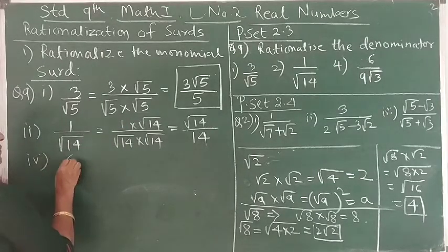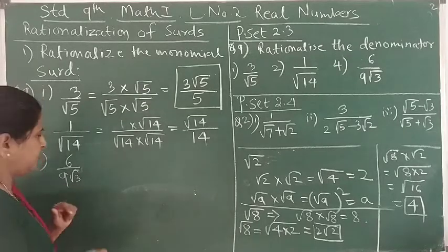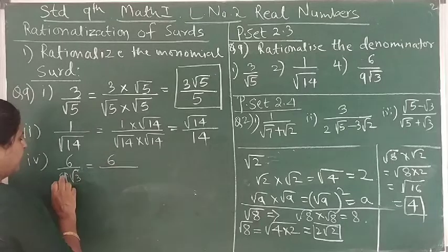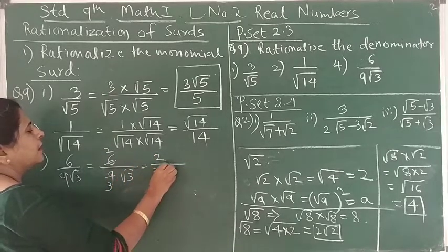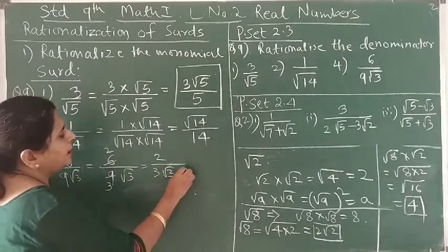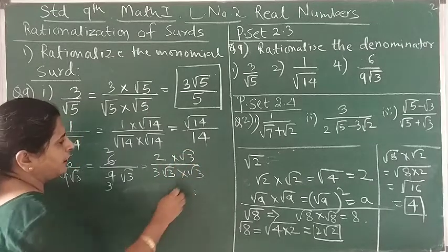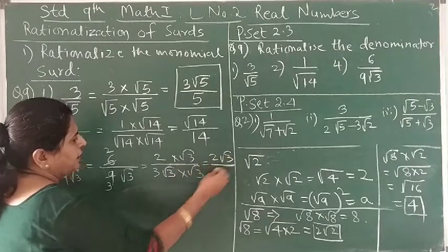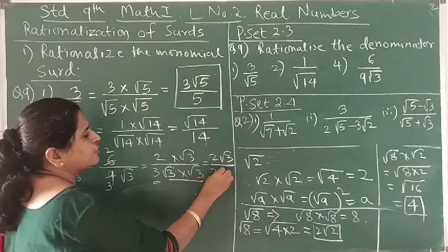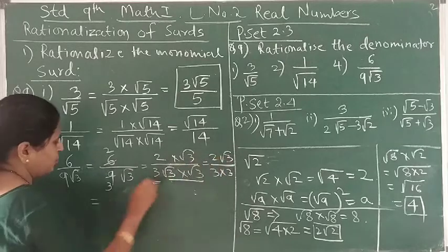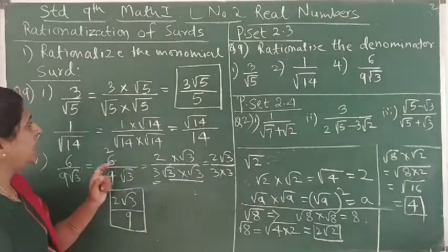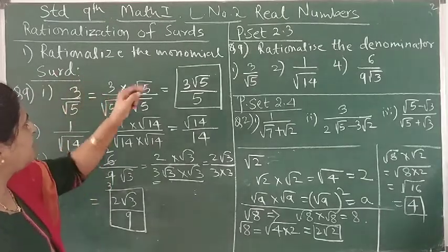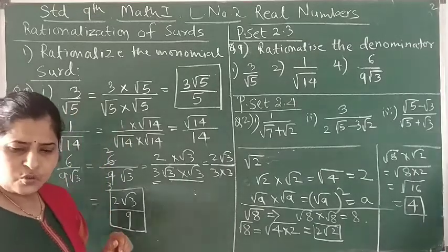The fourth part is 6 upon 9 square root of 3. Here 9 square root of 3 is a mixed form where 9 is rational and square root of 3 is irrational. We can simplify: 6 divided by 9 is 2/3, leaving 2 upon 3 square root of 3. Now multiplying numerator and denominator by square root of 3, the numerator becomes 2 square root of 3, and the denominator becomes 3 times 3, which is 9. So the answer is 2 square root of 3 upon 9. This is the rationalization of the monomial denominator.